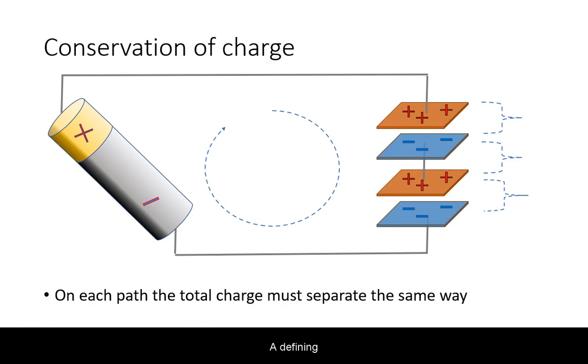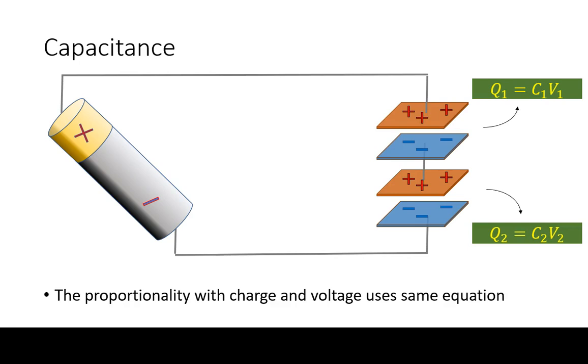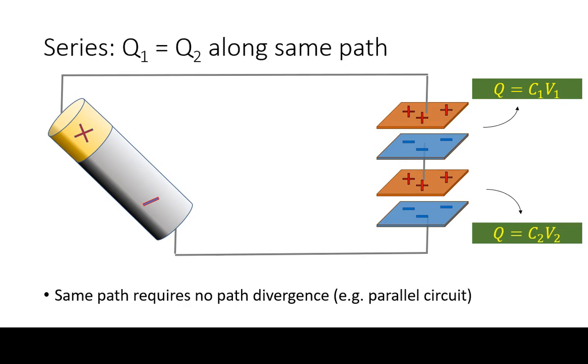A defining law governing circuits is the conservation of charge. Charges may be separated, but neither created nor destroyed. This means when considering capacitance for each of the elements, if they are connected sequentially along the same path, the charge separation must be the same.